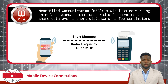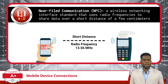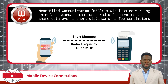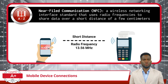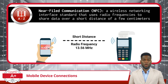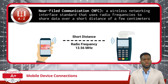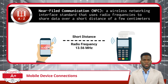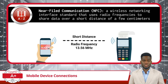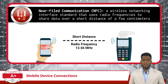Switching away from wired connection types, we will now cover a few wireless connection options used by mobile devices. First up for the wireless category, we have Near Field Communication, or NFC. NFC is a wireless networking interface standard that uses radio frequencies to share data over a short distance of a few centimeters or inches. This short-range wireless connectivity enables various convenient functions like authentication and mobile payments — for example, by simply tapping your device to a reader, you can authenticate access or complete purchases quickly and securely.